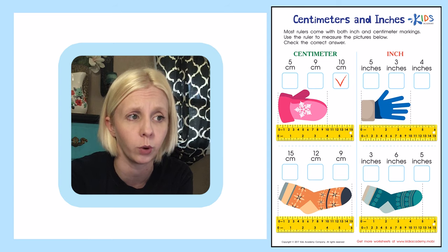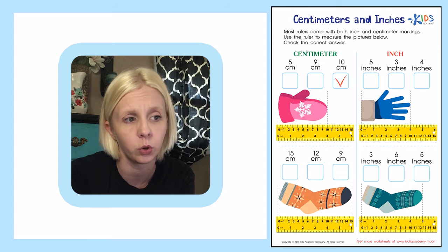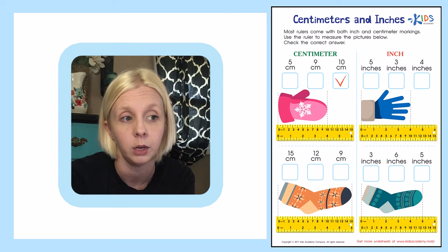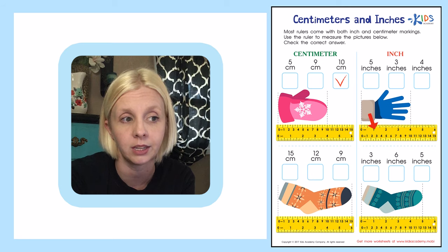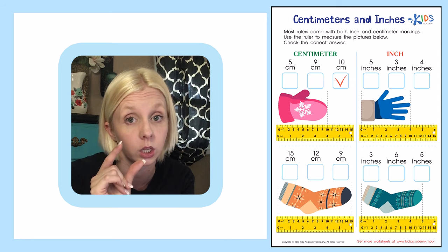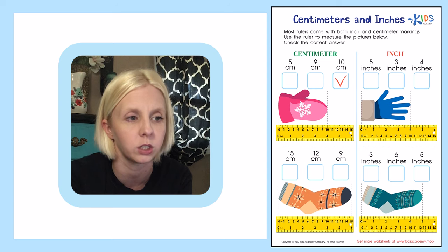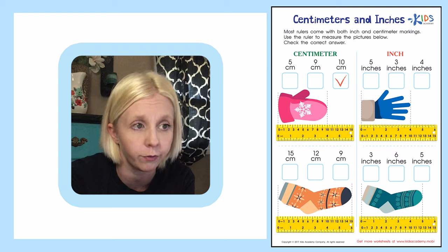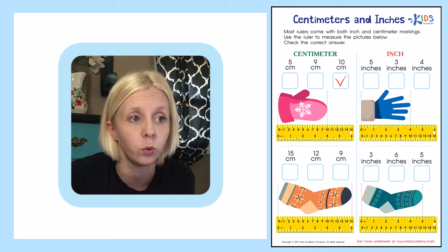This one says up here in red — it's inches — so all our choices are going to be inches. We're no longer looking at the small numbers; we're looking at the big numbers. They switched them up on this one: the inches are now closer to the glove at the top. We've lined up our glove at the end of the ruler, and where the last part of the glove ends up is at four, so it's going to be four inches. I'm going to put a check on four.